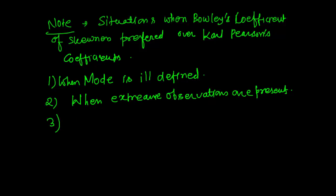When distribution has open-end class, in this situation we can't find out arithmetic mean, so we can use Bowley's coefficient of skewness.